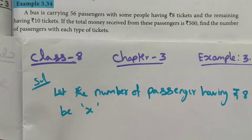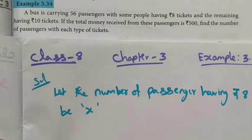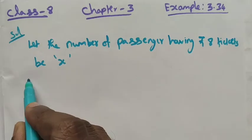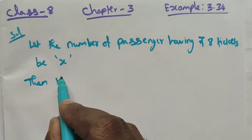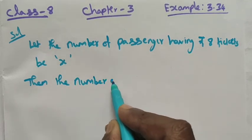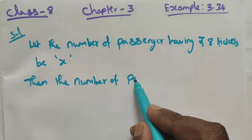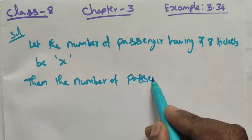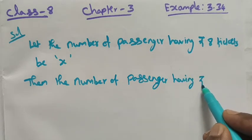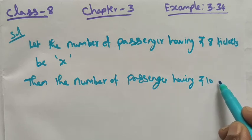The number of passengers with rupees 10 tickets is 56 minus x, since the remaining passengers after those with rupees 8 tickets hold the rupees 10 tickets.